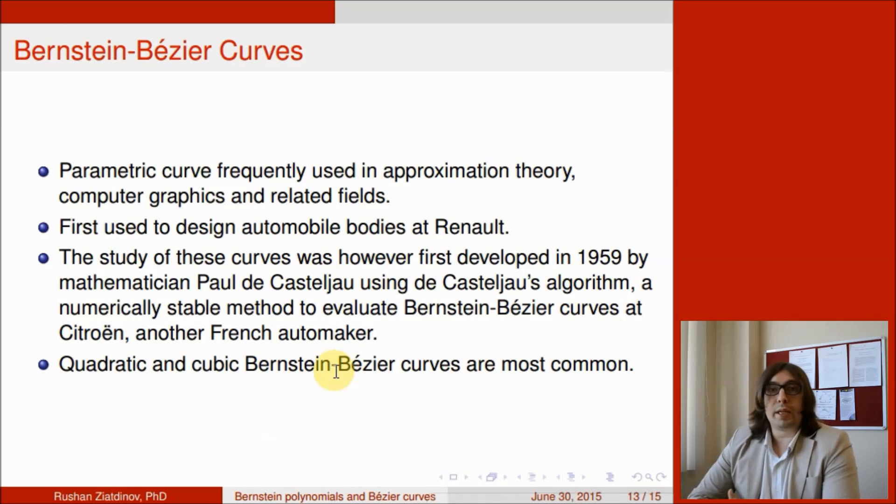Now I would like to shortly explain the applications of Bernstein polynomials for generating Bernstein-Bezier curves. These curves are very well known as Bezier curves in different areas of nowadays technology and science. They are parametric curves frequently used in approximation theory, computer graphics, and related fields. They were first used to design automobile bodies at Renault in France. The study of these curves was first developed in 1959 by mathematician Paul de Casteljau using the Casteljau algorithm, a numerically stable method to evaluate Bernstein-Bezier curves at Citroën, another French automaker. As it's well known, quadratic and cubic Bernstein-Bezier curves are most commonly used.